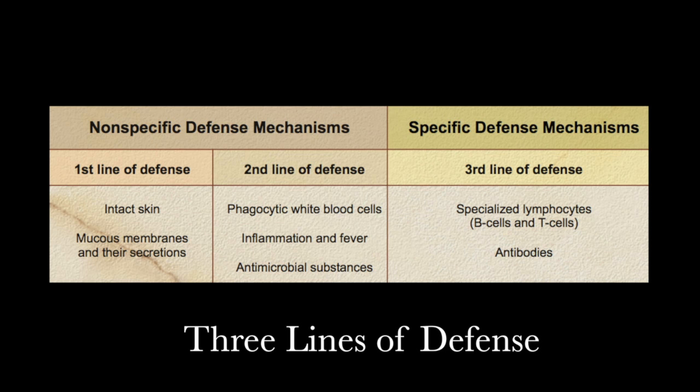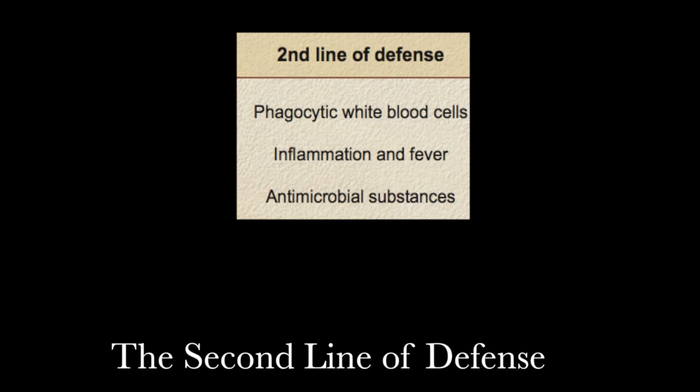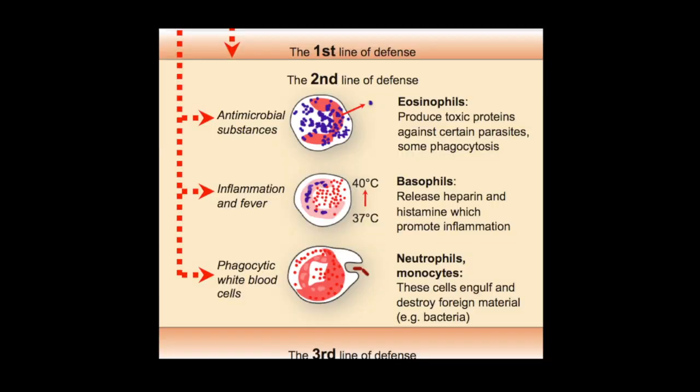Before we can talk about the immune responses we have to talk about the lines of defense. Our bodies have three lines of defense. The first line of defense is intact, unbroken skin, mucous membranes, and their secretions such as your nose and mucus. The second line of defense falls under what we call innate immunity. Innate immunity consists of the non-specific defense mechanisms the body employs to fight a pathogen, such as phagocytic white blood cells, antimicrobial substances, and the processes of inflammation and fever.